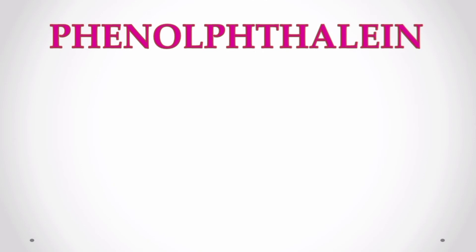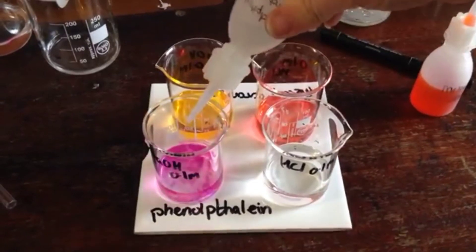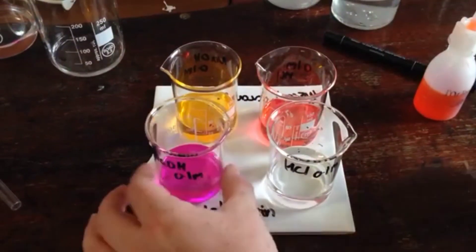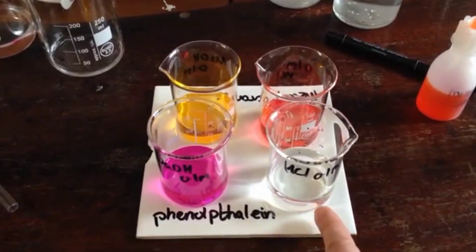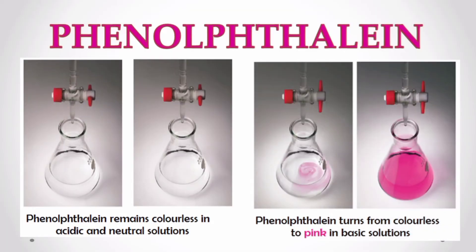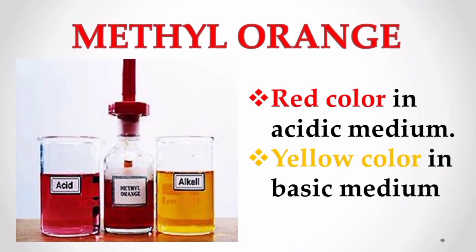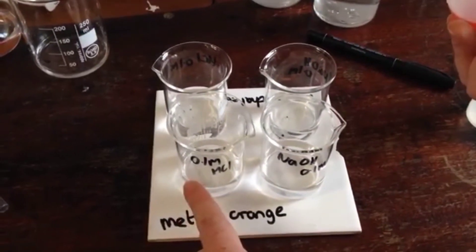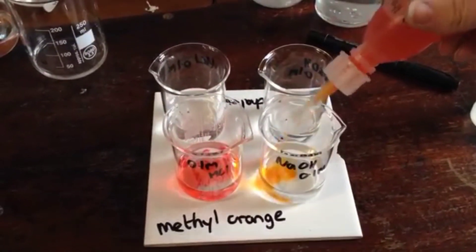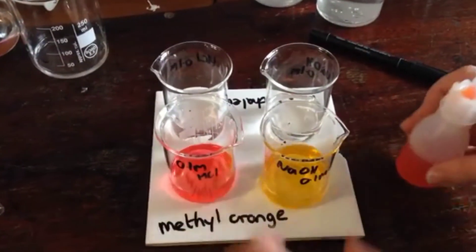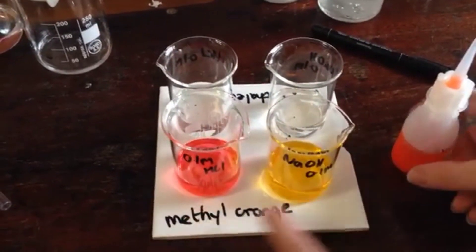When added to acid, phenolphthalein remains colorless in acidic and neutral solutions, whereas phenolphthalein turns bright pink in basic solution. Methyl orange is another synthetic indicator which shows different colors in acidic and basic mediums. On adding to acid, methyl orange changes its color to red, and in a base it changes its color to yellow.